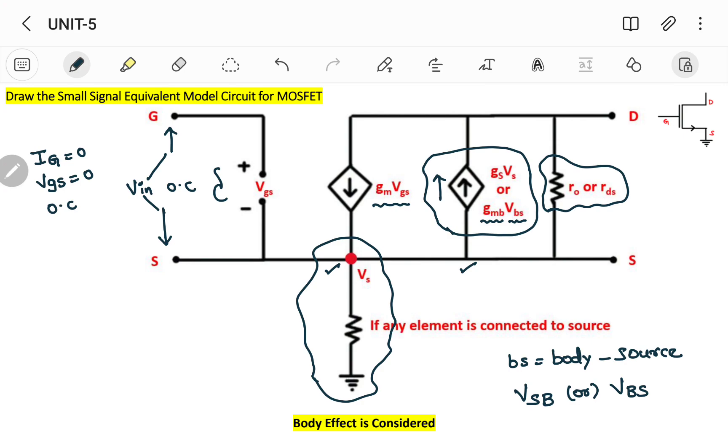You'll get a clear idea about this whenever we are dealing with the concept called as common source, common gate, and common drain amplifiers. Then we shall see these different kinds of small signal equivalent models. So as of now, you try to remember only these two parameters. These two parameters get added extra whenever body effect is considered. Rest everything will be same as your small signal model if body effect is not considered.